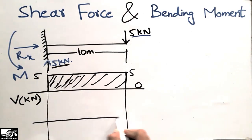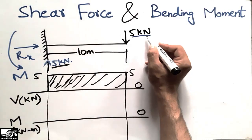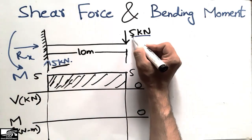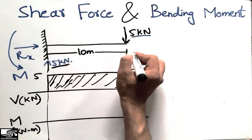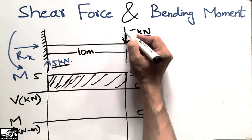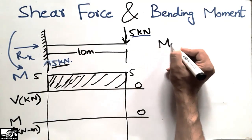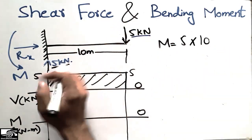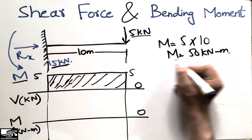Now from the shear force diagram we calculate the bending moment. The reference line is zero, and the moment is calculated in kilonewton-meters since load is in kilonewtons and distance is in meters. The moment at the support is found by multiplying the 5 kilonewton load by the 10-meter distance, giving force times distance.